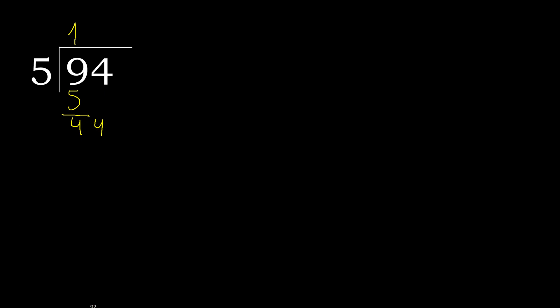Bring down the next digit: 44. 5 multiplied by 9 is 45 — that is greater. 5 multiplied by 8 is 40 — that is not greater. So we use 8. 44 minus 40 is 4. There is no next number, so we continue.